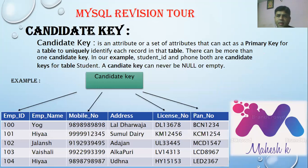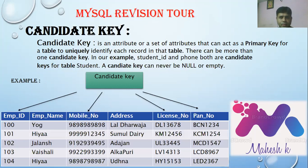Candidate key: a candidate key is an attribute or set of attributes that can act as a primary key for a table to uniquely identify each record. There can be more than one candidate key. In the employee example, Employee ID, Mobile Number, License Number, and PAN Number are all considered candidate keys because all records are uniquely identified by each. A candidate key can never be null or empty.